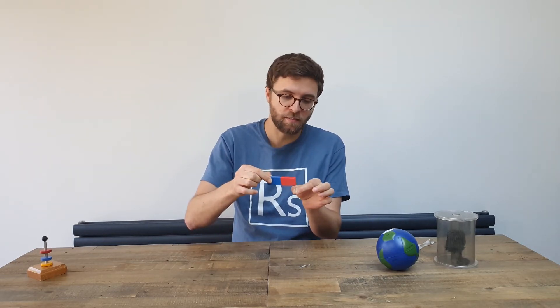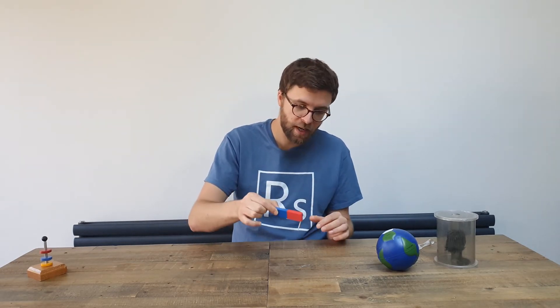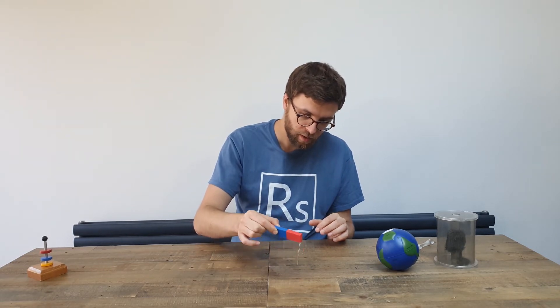An induced magnet is one that becomes magnetic when it's placed inside the magnetic field of another magnet. For example, this paperclip can now pick up another paperclip.